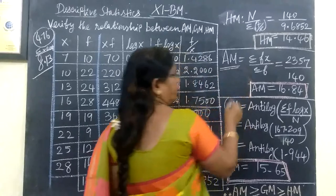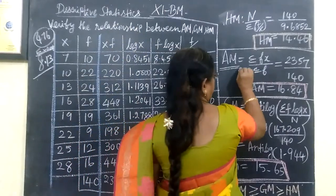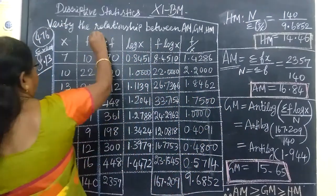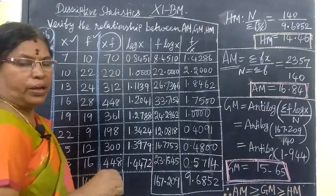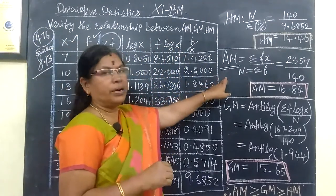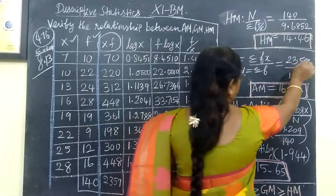For arithmetic mean, our formula is sigma fx divided by sigma f. Sigma f is nothing but capital N. Sigma fx means f multiplied by x. So this is the first tabular column we need to make. We are making the tabular column according to the formula.